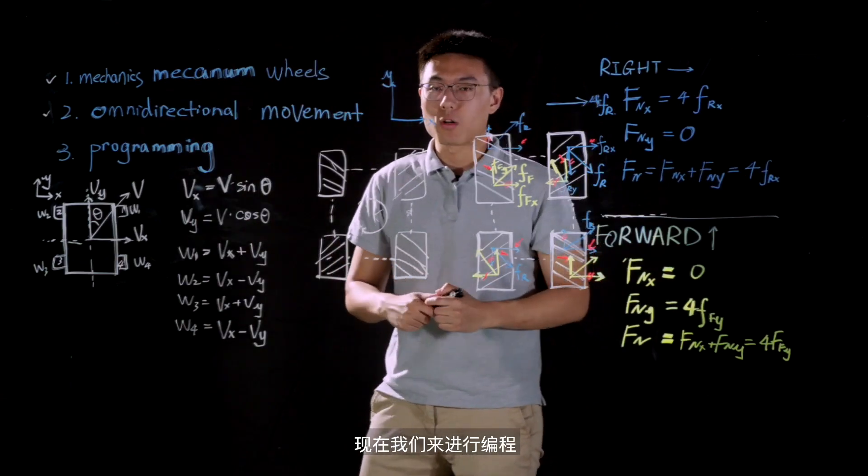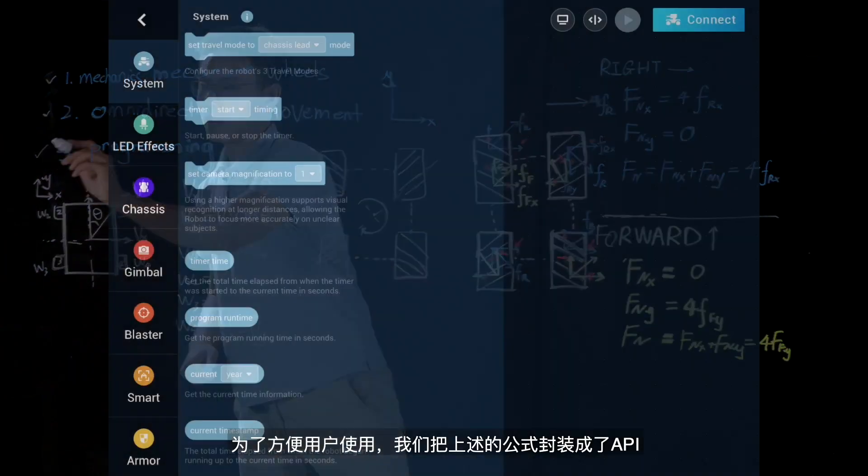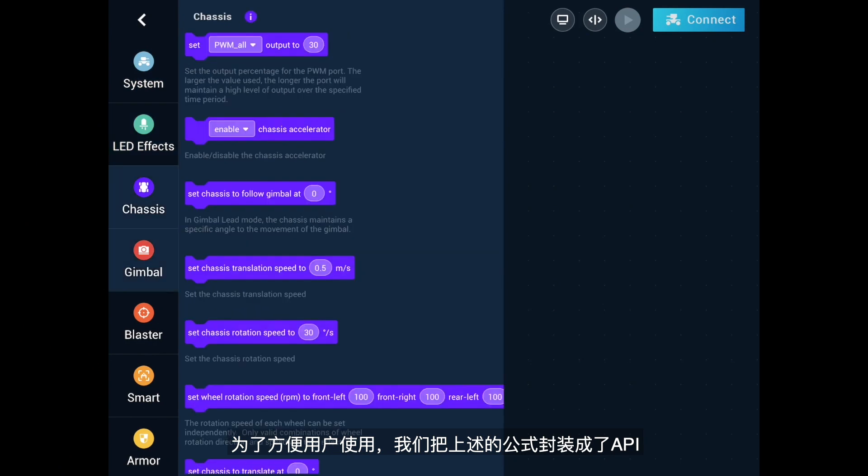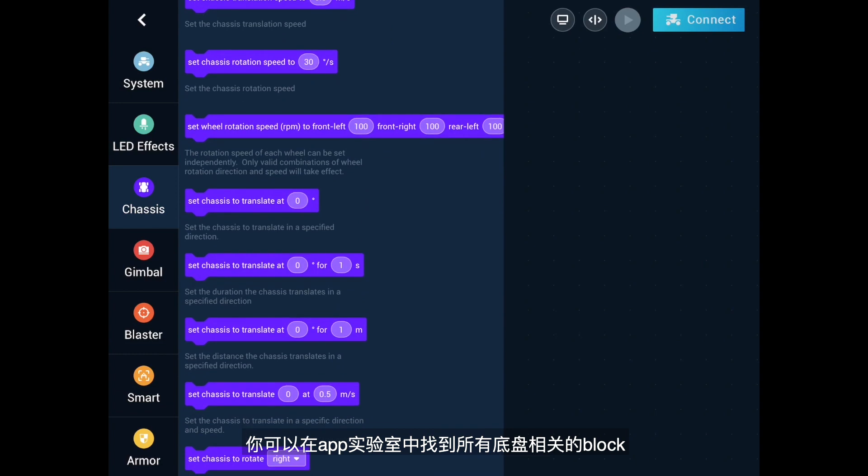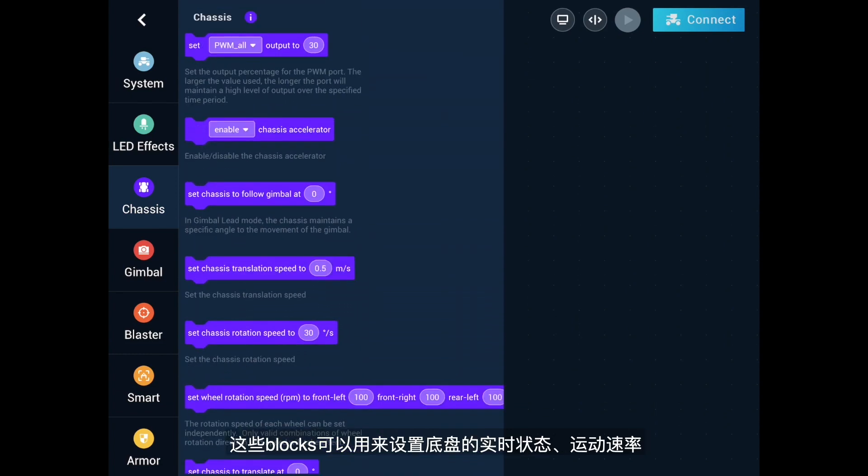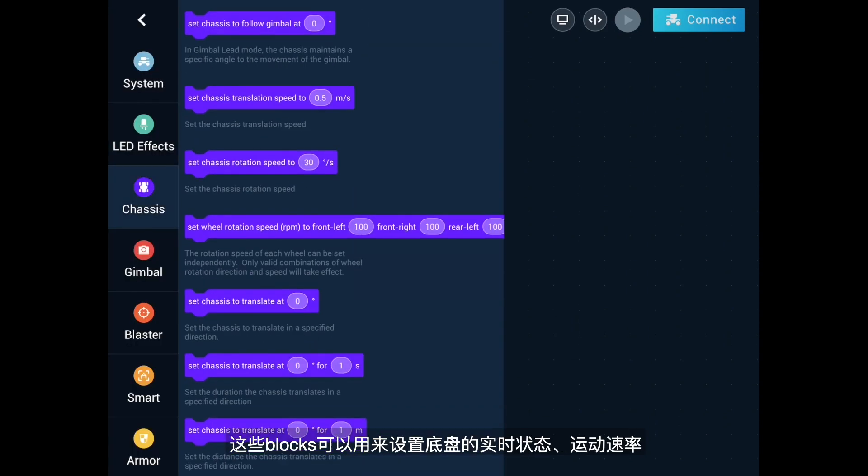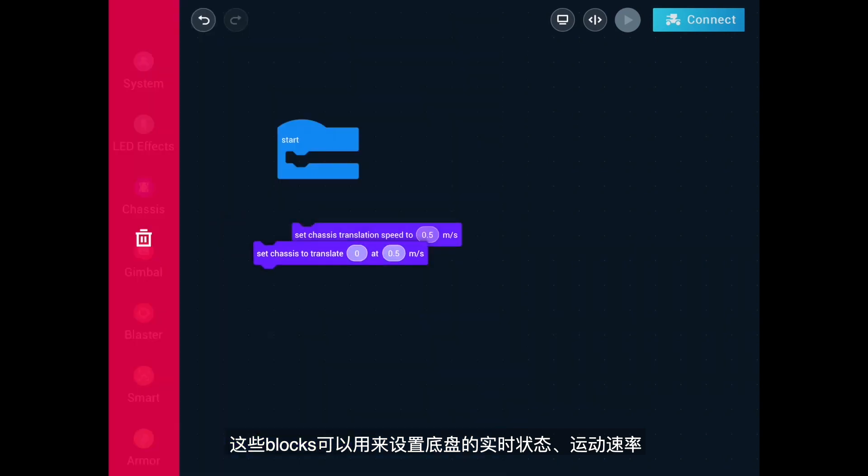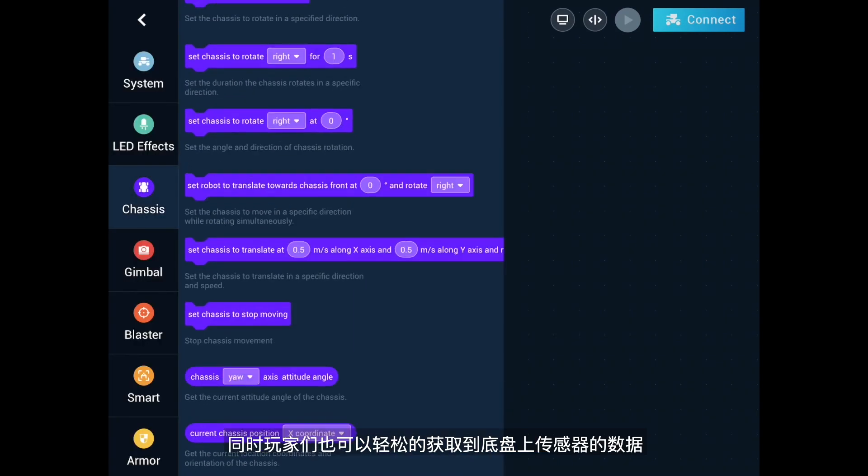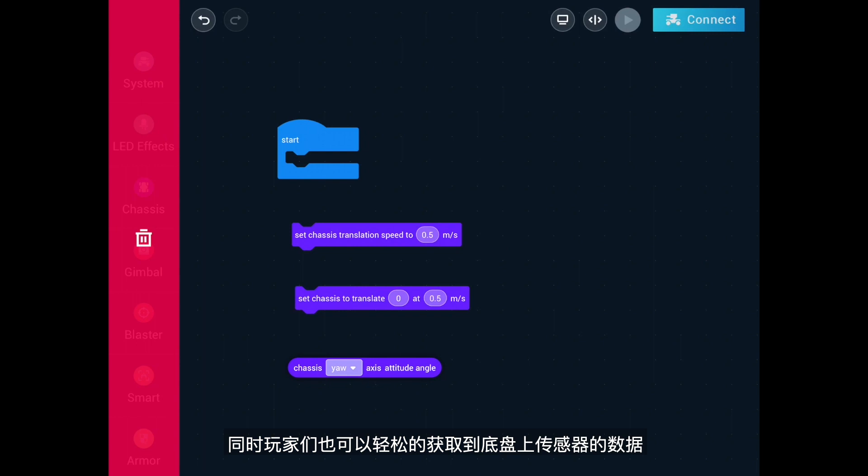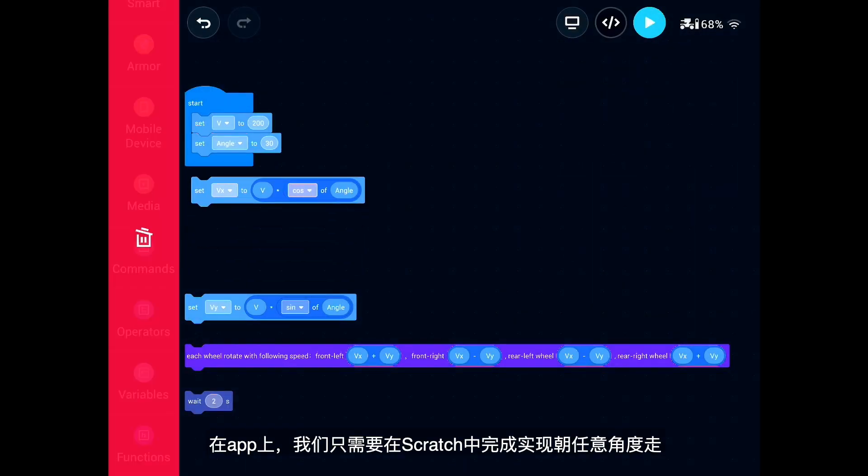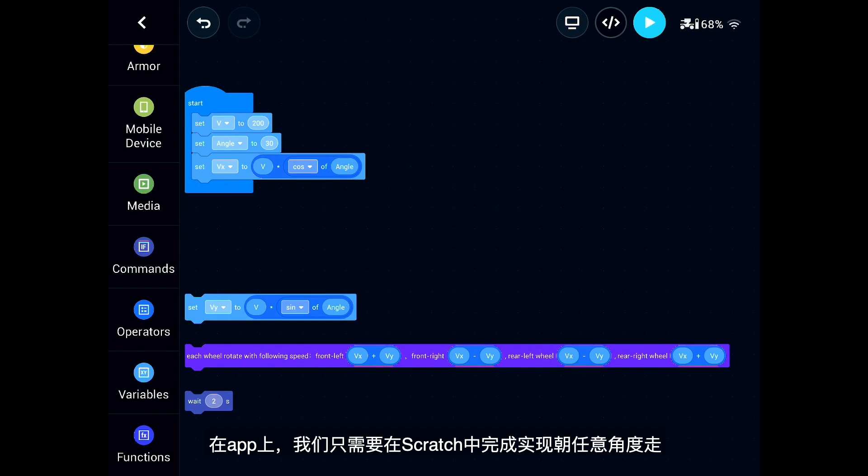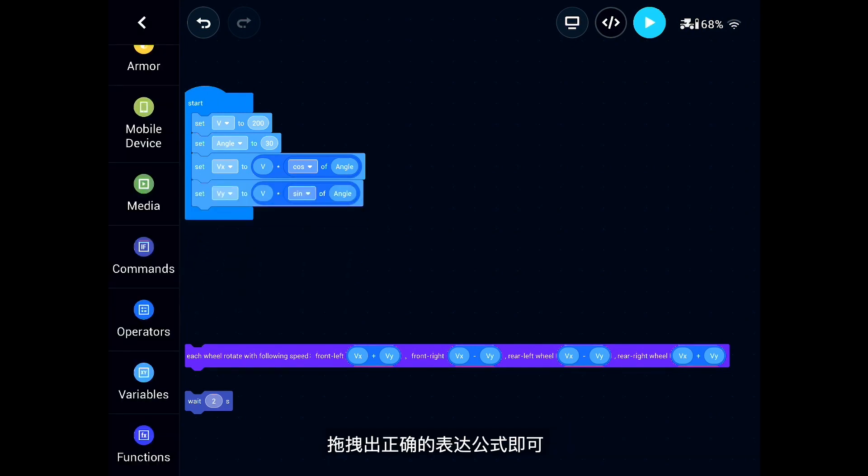Now it's time to do some programming. For your convenience, we have encapsulated above mentioned formulae as an API. And you can view all blocks related to the chassis. These blocks can be used to set the real-time status and motion of the chassis. Users can also easily obtain data from the sensors installed on the chassis. In the app, we can program the robot to move at any angle simply by dragging out blocks to build correct formulae.